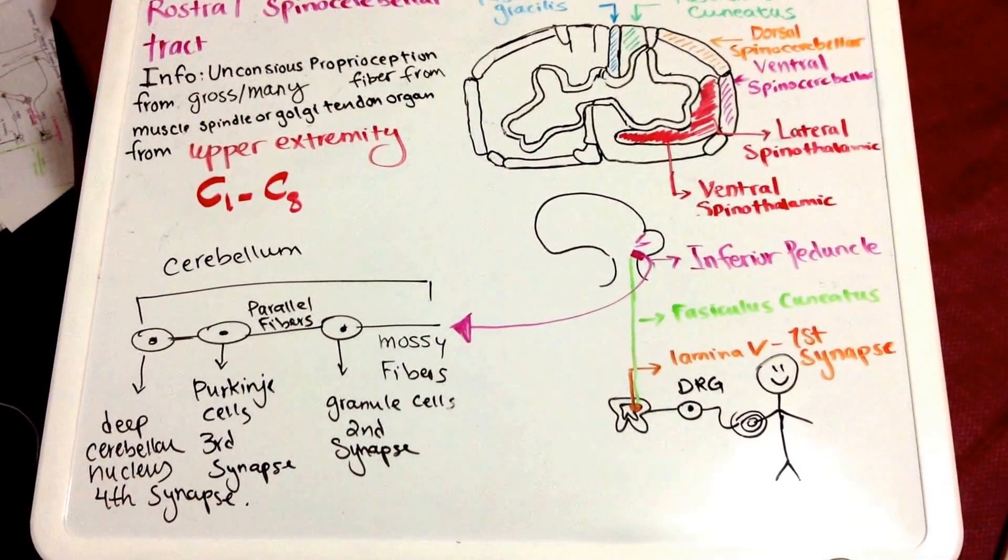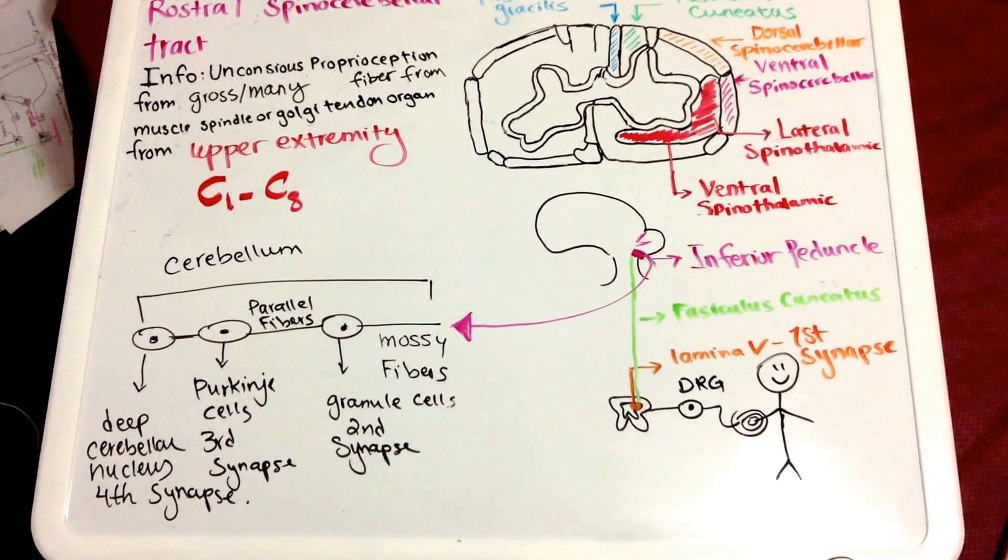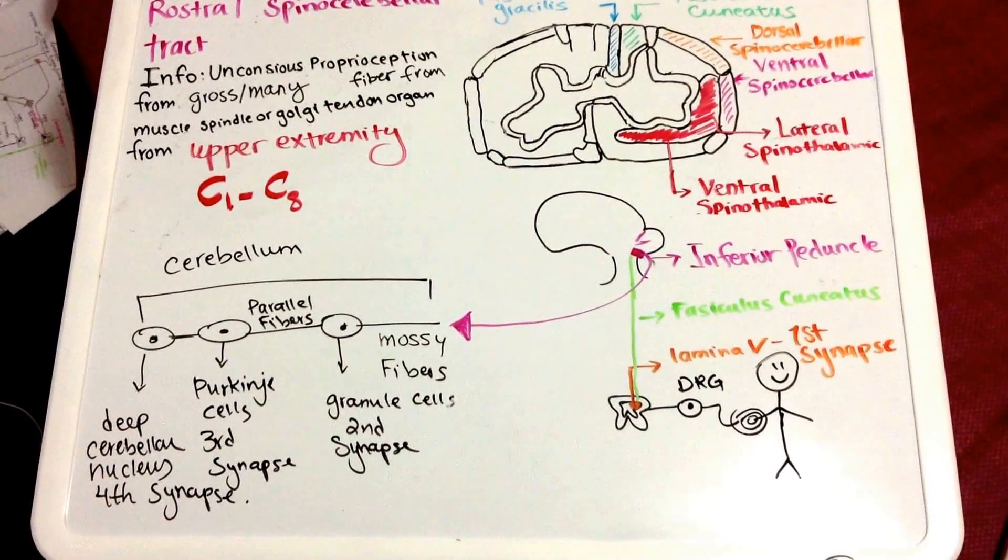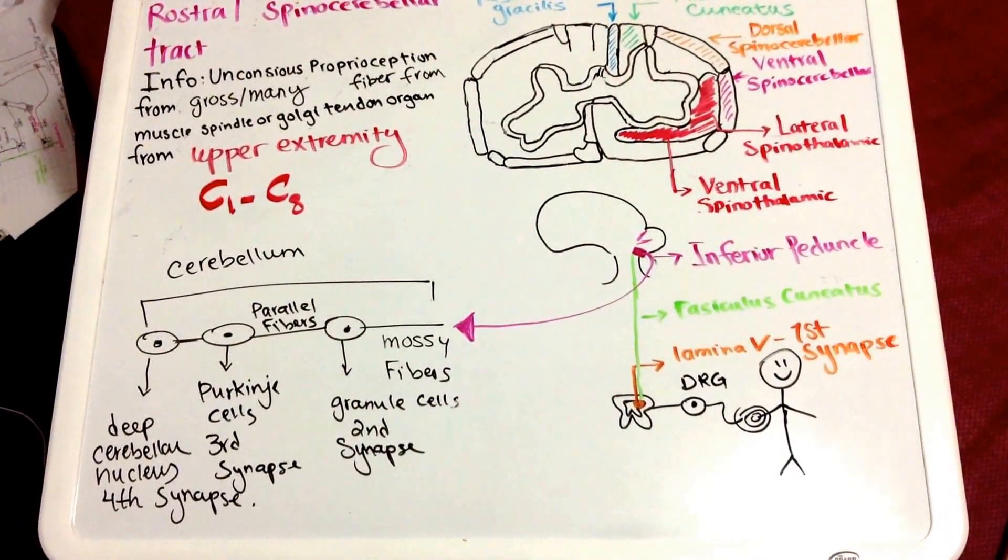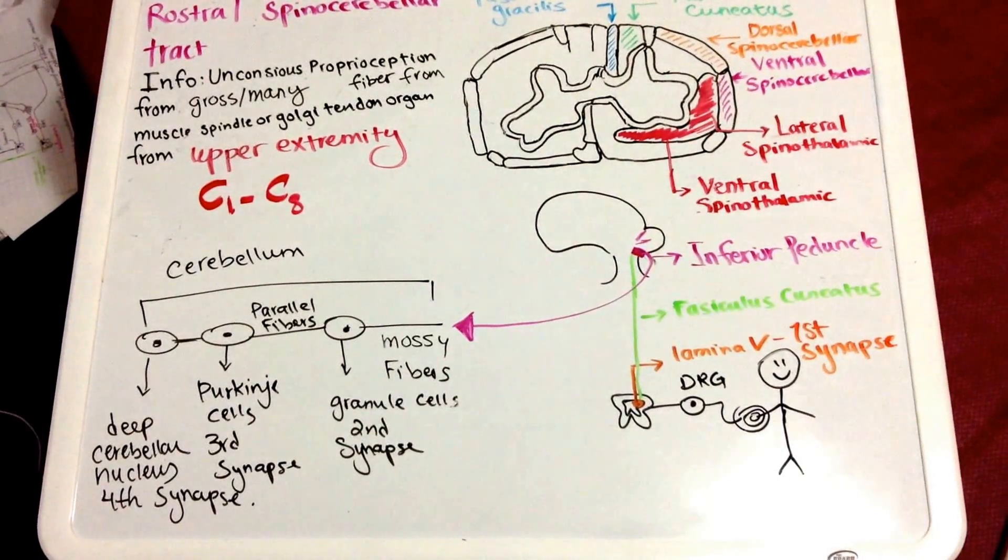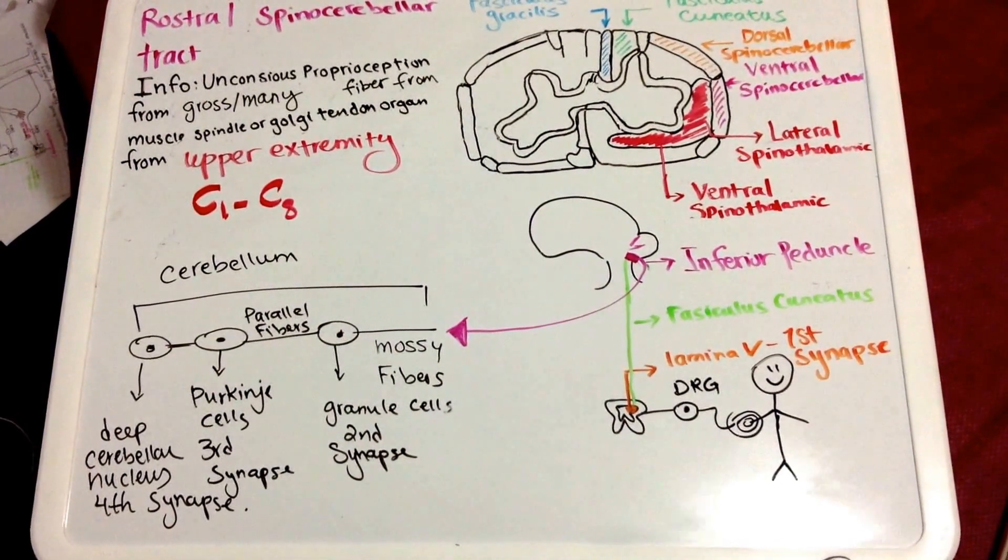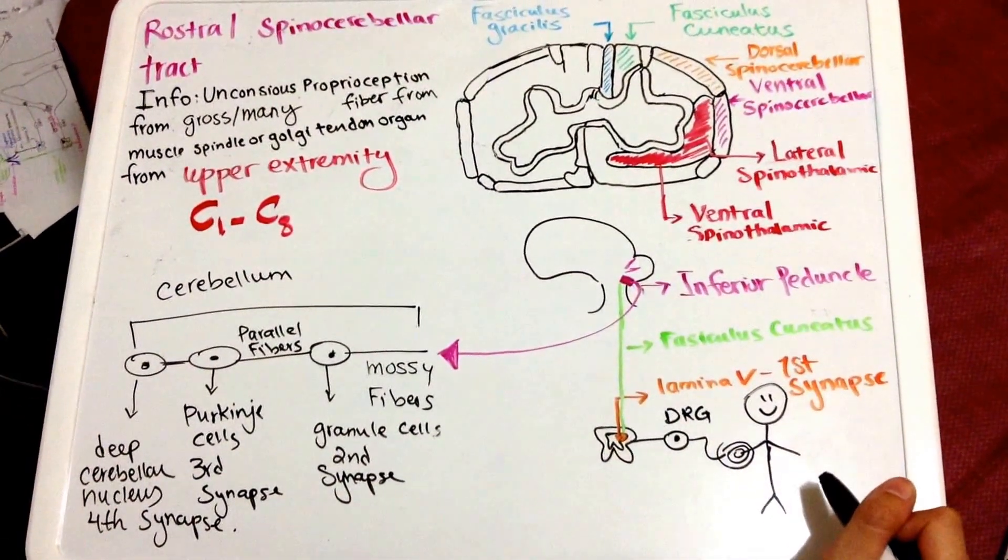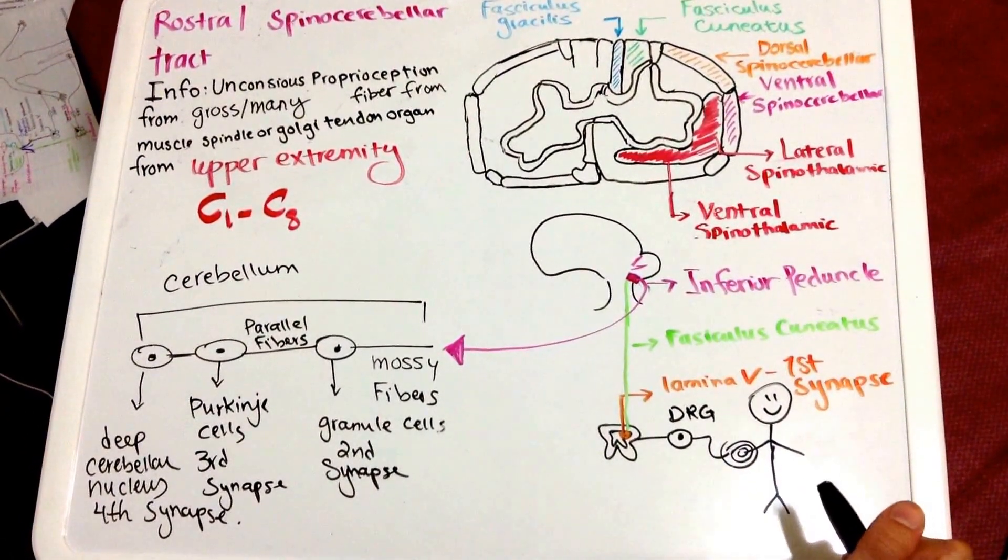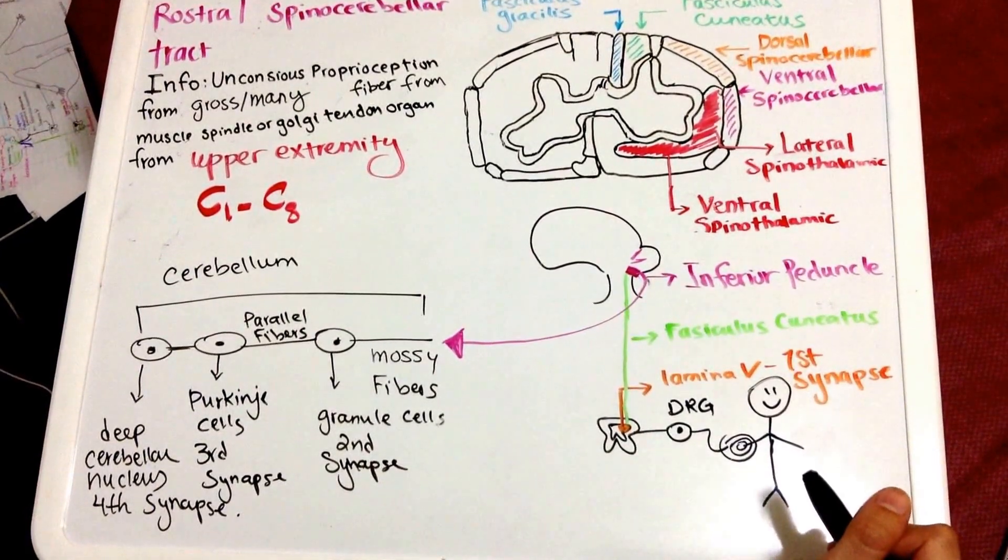Except that the ventral was for lower extremity and the rostral takes unconscious proprioception from gross or many fibers from muscle spindles or golgi tendon organs from the upper extremity C1 to C8. So let's say that this guy's hand muscle spindle was stretched or its golgi tendon sensed a lot of tension.